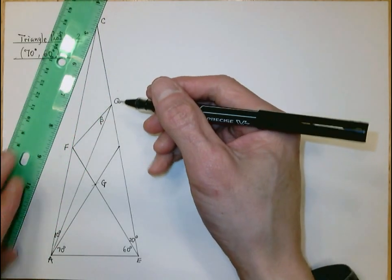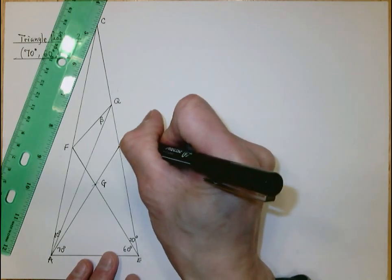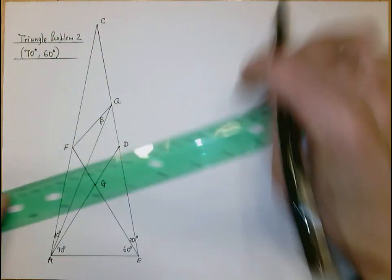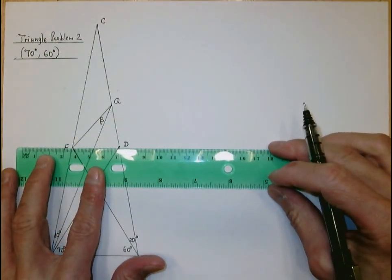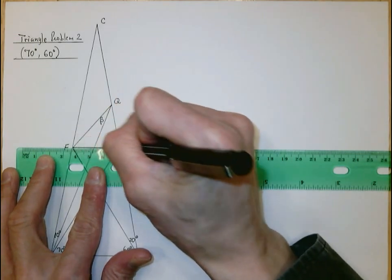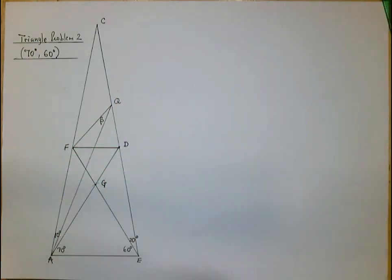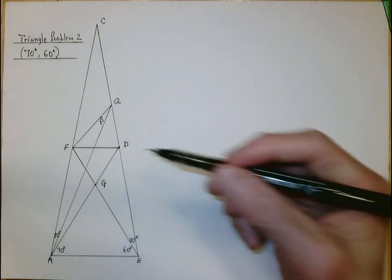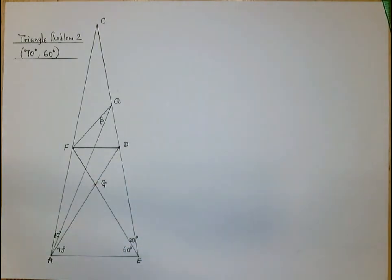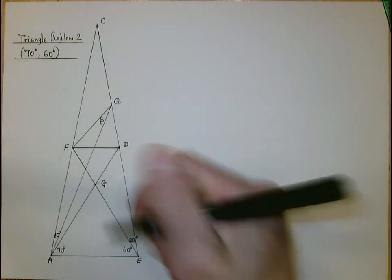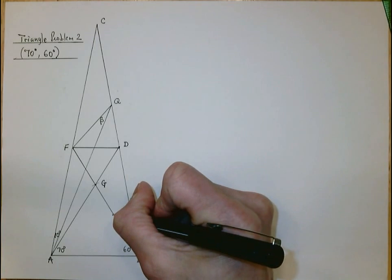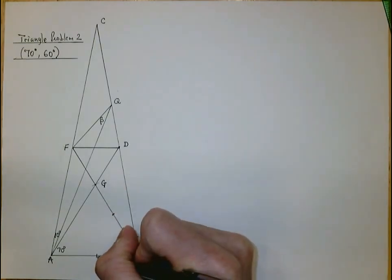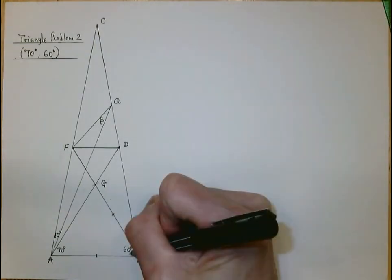I'm going to call this intersection point D and connect FD as well. Based on this construction, GE is congruent to EA, and that is an isosceles triangle with GE congruent to EA, and that angle is 60 degrees.